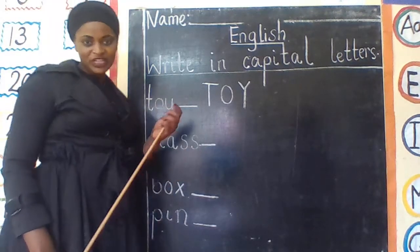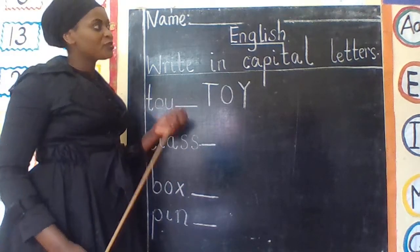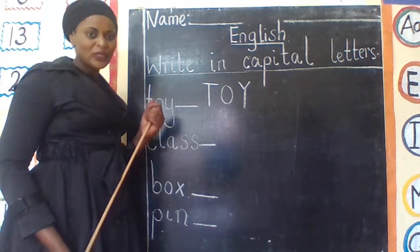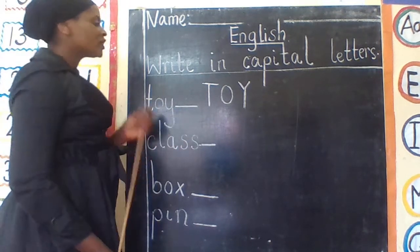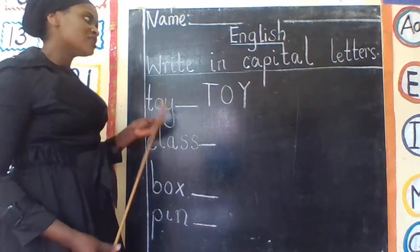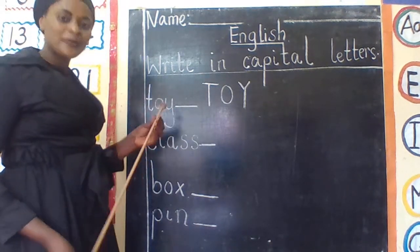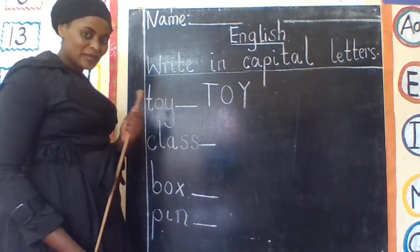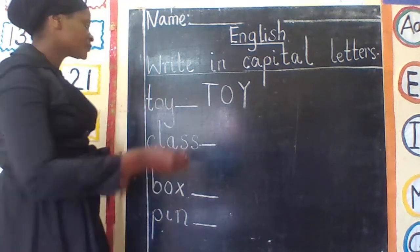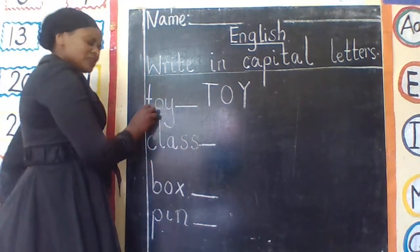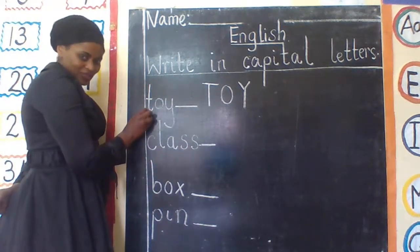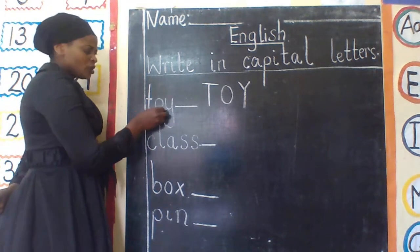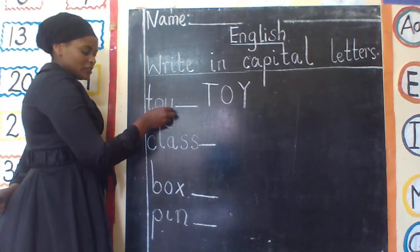Okay, now children, we have already learned the alphabet. Now we are learning how to change words into capital letters. For example, can you read this one? Try to read this one: T-O-Y.